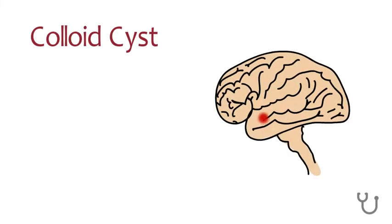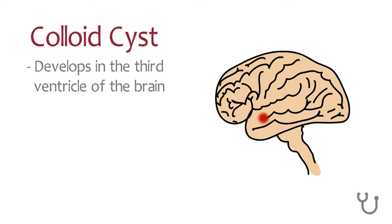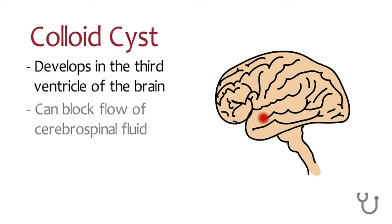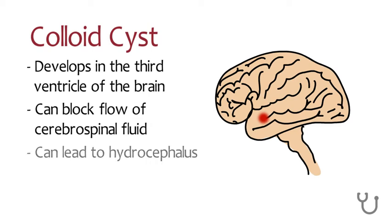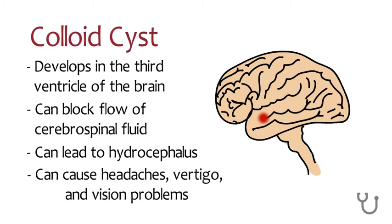A colloid cyst is a type of cyst that develops in the third ventricle of the brain. These cysts can block the flow of cerebrospinal fluid and lead to a condition called hydrocephalus. Colloid cysts can also cause other symptoms like headaches, vertigo, and vision problems.